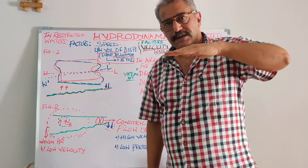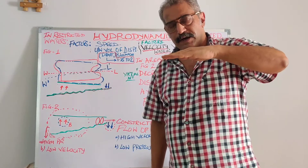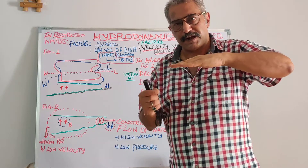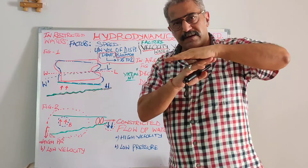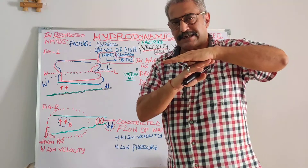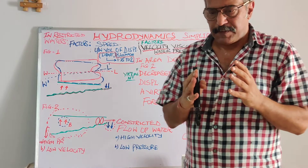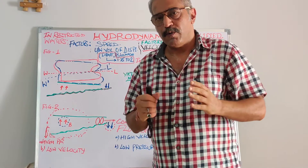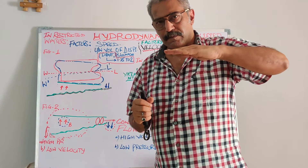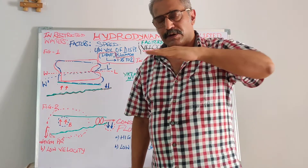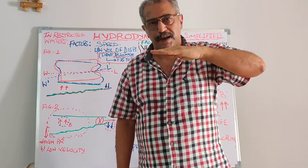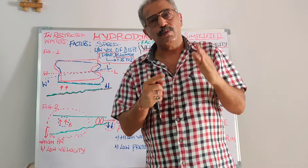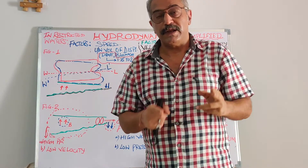Once speed increases and with a block coefficient of more than 0.7, the bow goes down — the draft increases at the bow and there is a slight decrease in draft at the stern. Consider that when the vessel was static on even keel, the underwater volume of displacement was even. But the moment she picked up speed, she starts tipping, so the underwater volume of displacement is no longer even compared to when she was static on even keel.